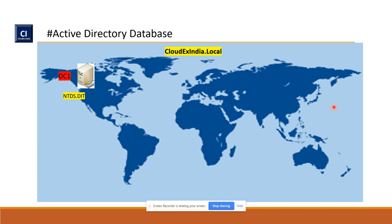ntds.dit is the actual file where all objects are stored. Whatever you create — users, computers, groups — all information is stored inside this particular database. So if your domain environment is spread across multiple locations or sites, each domain controller maintains this file.